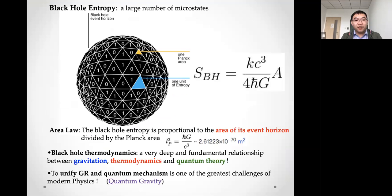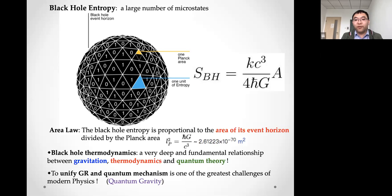However, if we consider quantum effects, we find that black holes are not completely black — they lose energy and evaporate by Hawking radiation, and also have finite temperature and entropy. Most surprisingly, the black hole entropy is given by the area law, not the volume law. More precisely, the entropy is proportional to the area of its event horizon divided by the Planck area. Black hole thermodynamics and the area law indicate a deep, fundamental relationship between gravitation, thermodynamics, and quantum theory.